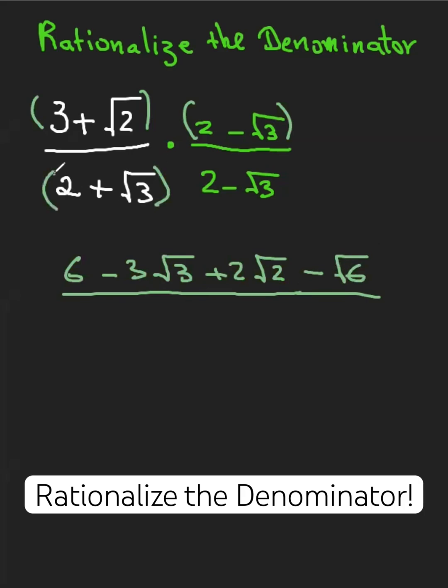And also we should foil this, but since this is the conjugate of this, you could take a shortcut by multiplying 2 times 2 and you get 4, and then positive root 3 times minus root 3, and that will give you negative root 9, which is 3. And since the bottom is going to be 1, we don't have to write it. And that's your final answer.